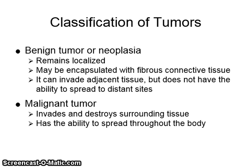Tumors are classified as benign or malignant. Benign tumors or neoplasias remain localized. They may be encapsulated with fibrous connective tissue, or they can invade adjacent tissues, but do not have the ability to spread to distant sites. Malignant tumors, however, invade and destroy surrounding tissues and have the ability to spread throughout the body.